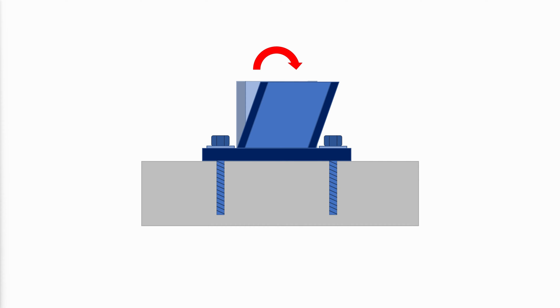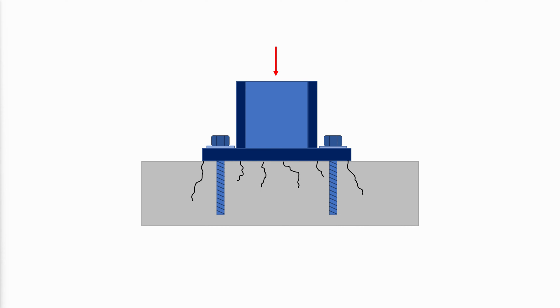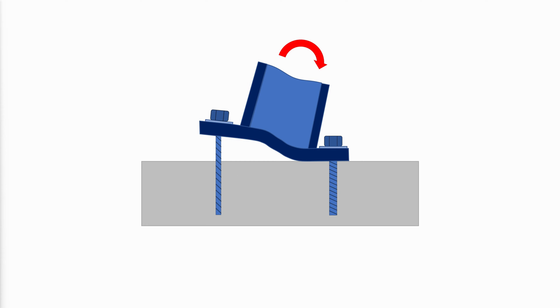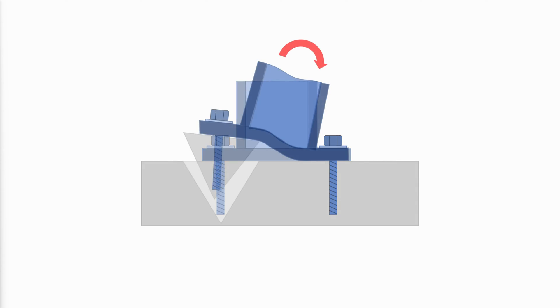The general behavior and distribution of forces for a column base plate connection with anchor rods will be elastic until either a plastic hinge forms in the column, a plastic mechanism forms in the base plate, the concrete crushes in bearing, the anchor rod yields in tension, or the concrete pullout strength of the anchor rod group is reached.